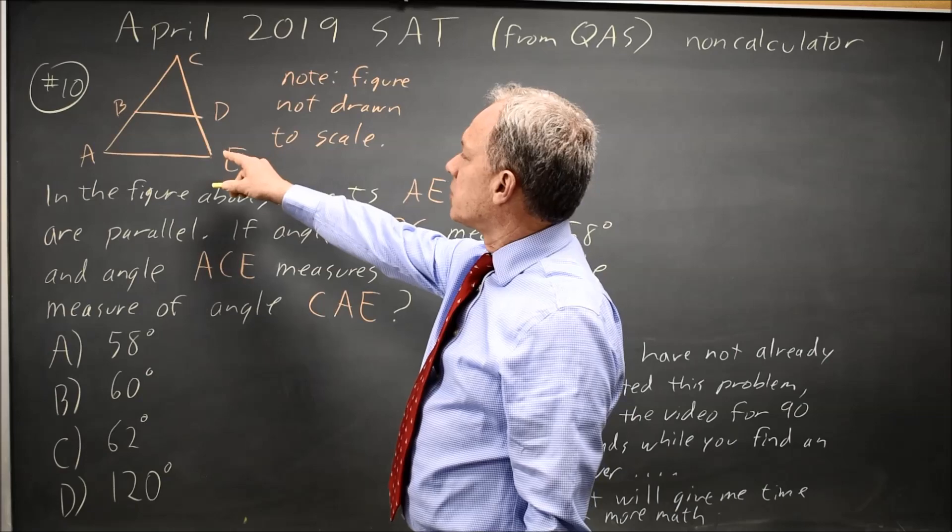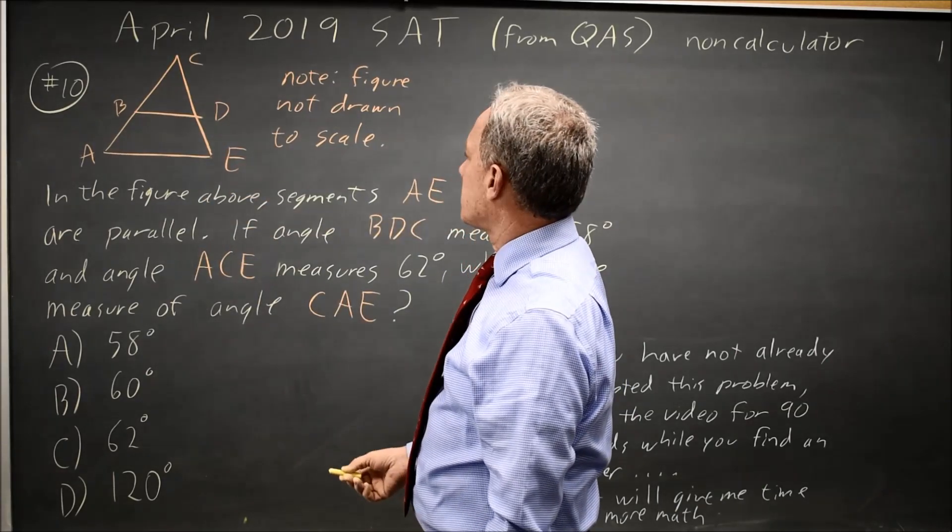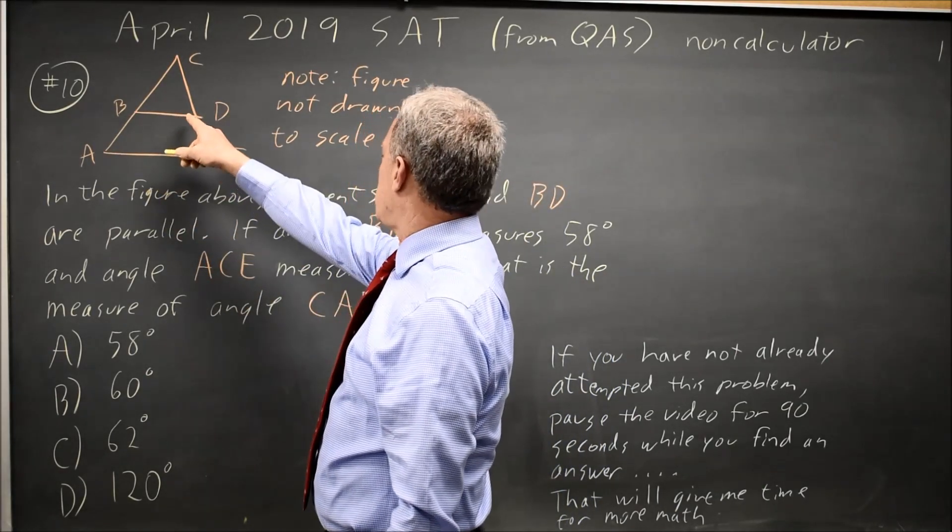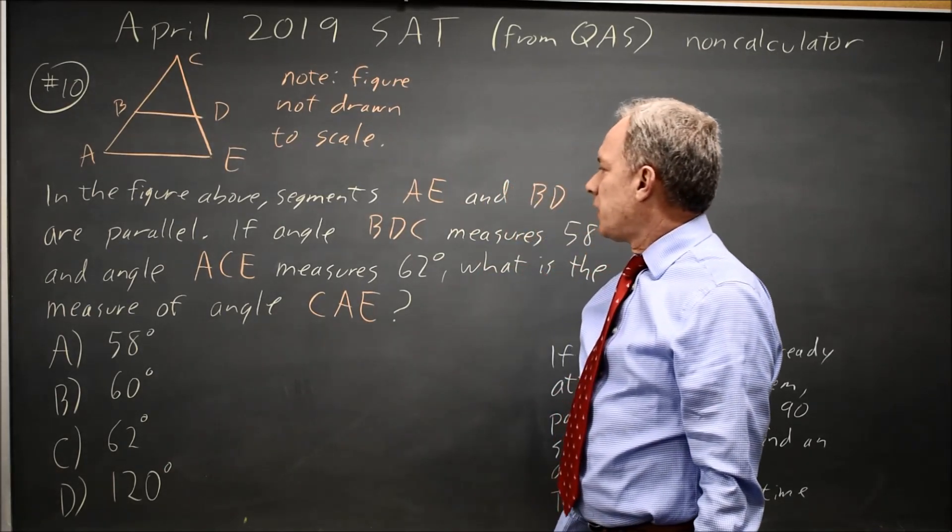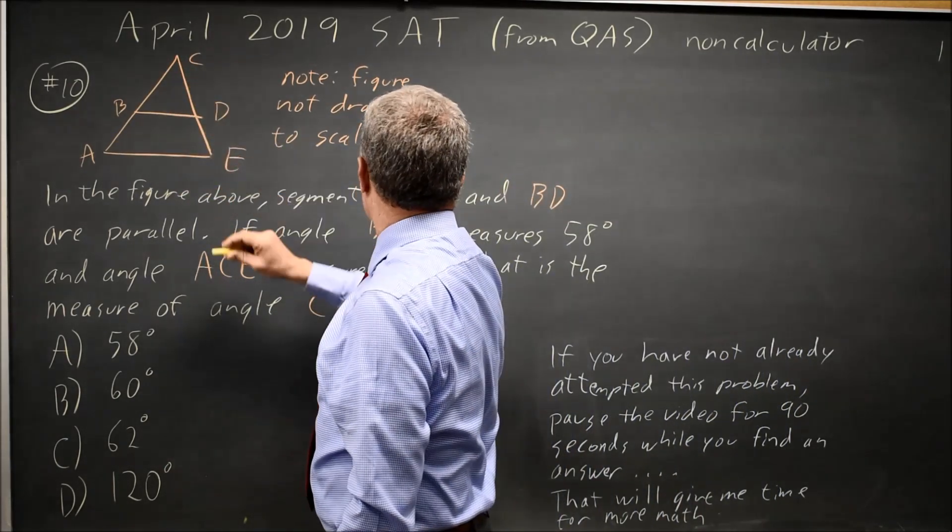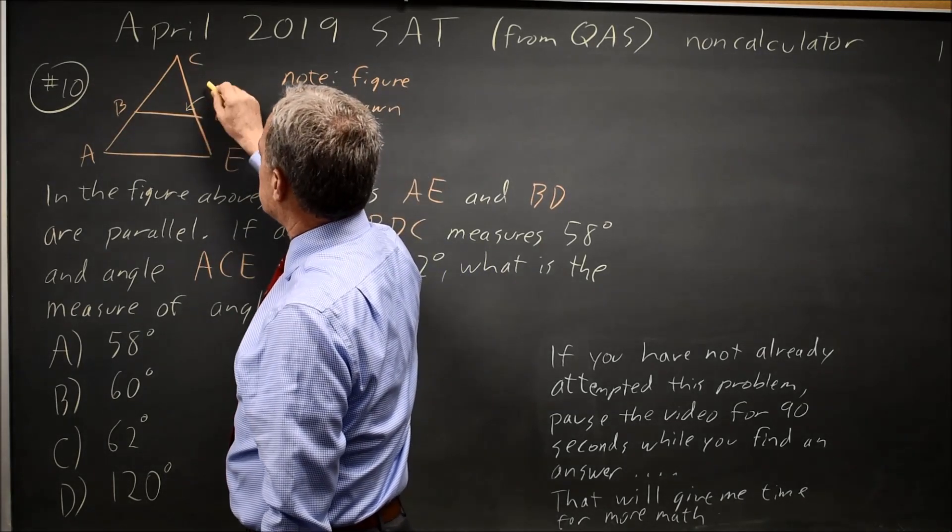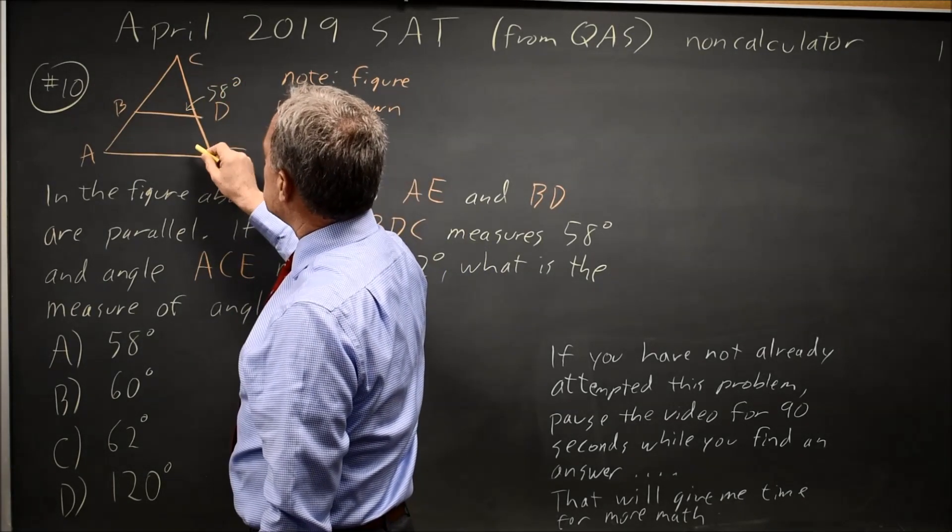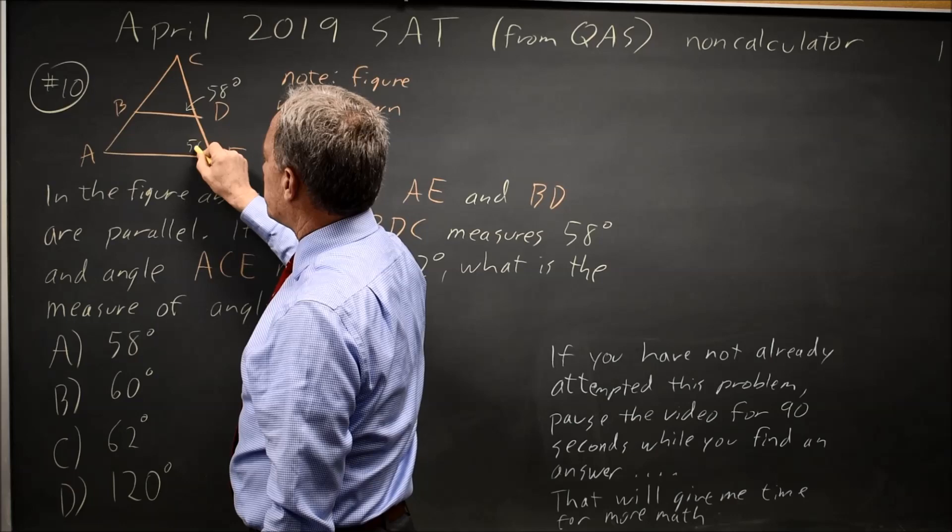College Board gives us a figure, not drawn to scale, and says segments AE and BD are parallel. Angle BDC, here to here to here, is 58 degrees. Since these lines are parallel, this is also 58 degrees.